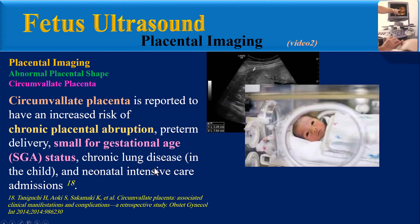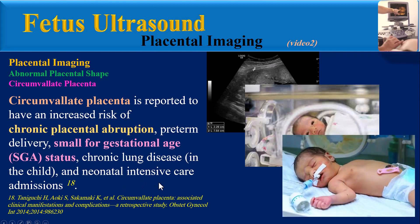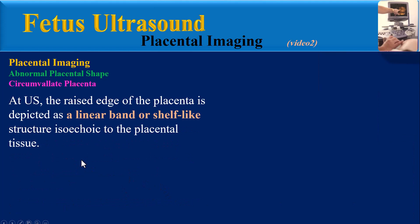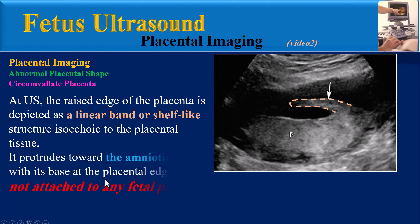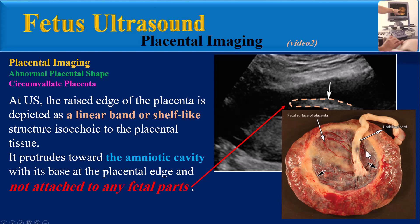Regardless of whether it is benign, circumvallate placenta is reported to have an increased risk of chronic placental abruption, preterm delivery, small-for-gestational-age status, chronic lung disease in the child, and neonatal intensive care admissions. At ultrasound, the raised edge of the placenta is depicted as a linear band or shelf-like structure isoechoic to the placental tissue. It protrudes toward the amniotic cavity with its base at the placental edge and is not attached to any fetal parts.